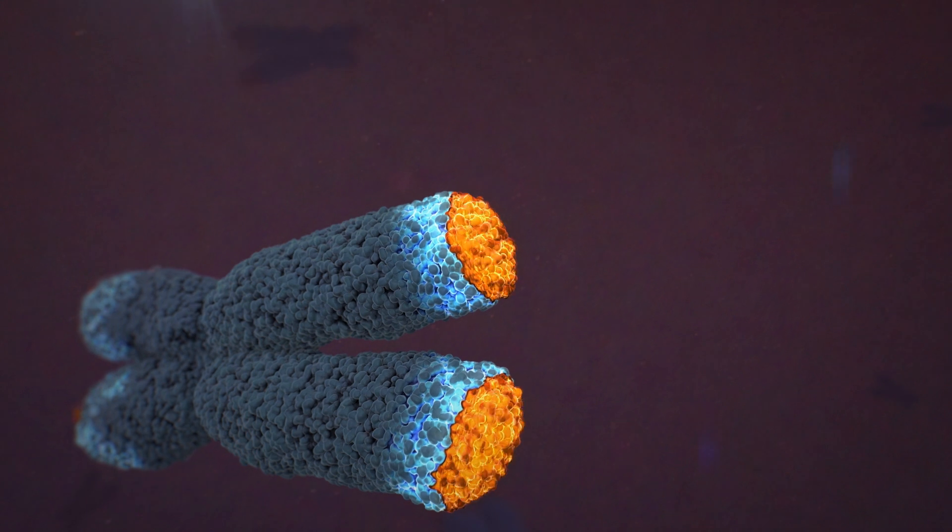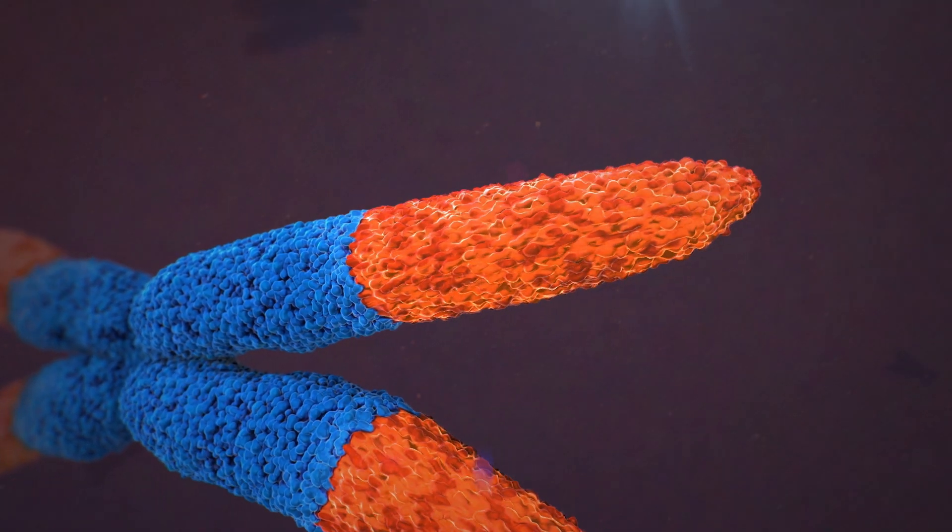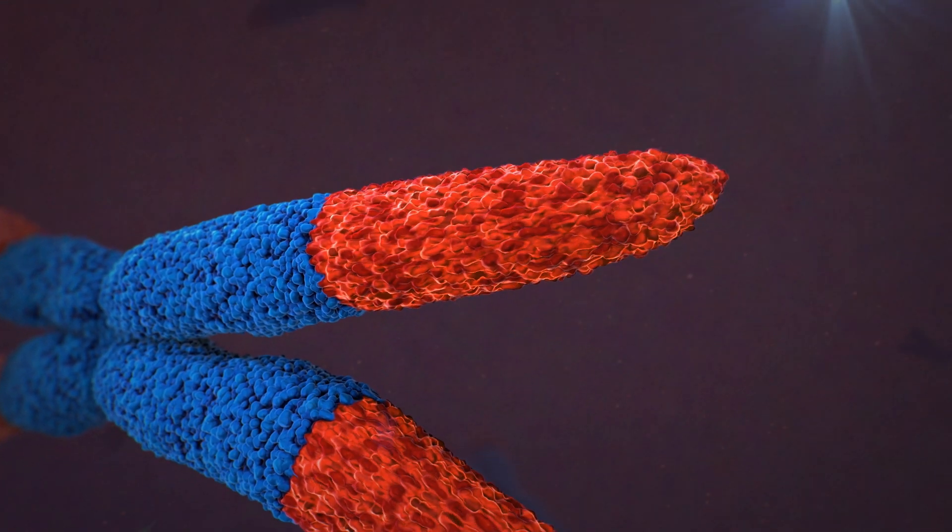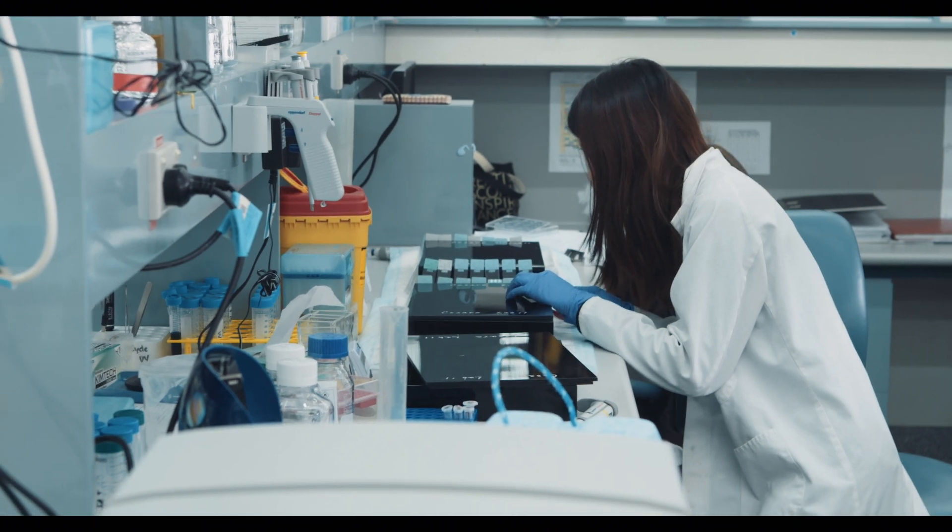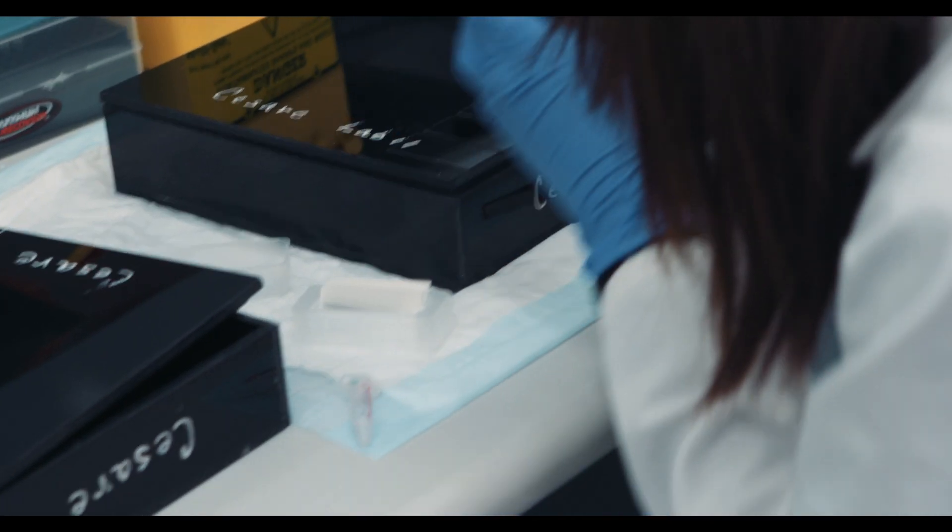Cancer cells find a way to reactivate telomerase and therefore keep their telomeres lengthening and dividing. And this is what enables cancer cells to be able to divide indefinitely. If we can block telomerase, this will then cause the telomeres in cancer cells to shorten again and the cells won't be able to divide anymore.